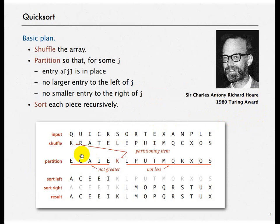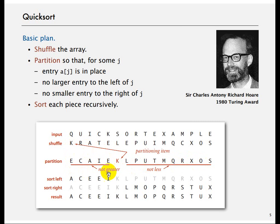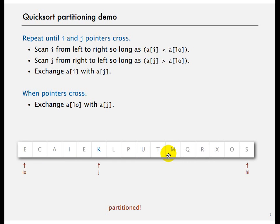Quicksort is recursive. The idea is that you pick a random element of the array — let's say the first one. Before that, you shuffle the input, which is order N. Then you pick a random element and try to put it in the correct position. After the iteration, all elements to the left are less than element k, and all elements to the right are greater than it. You then perform the same operation on the left and right parts.